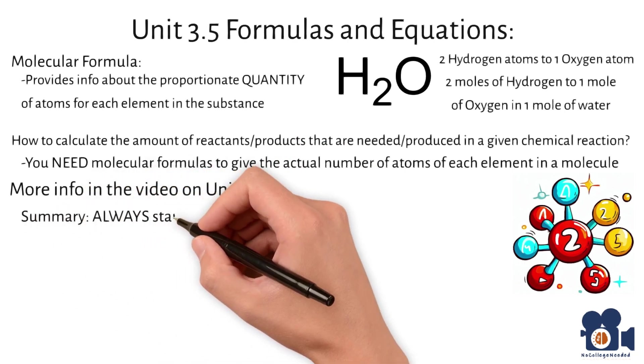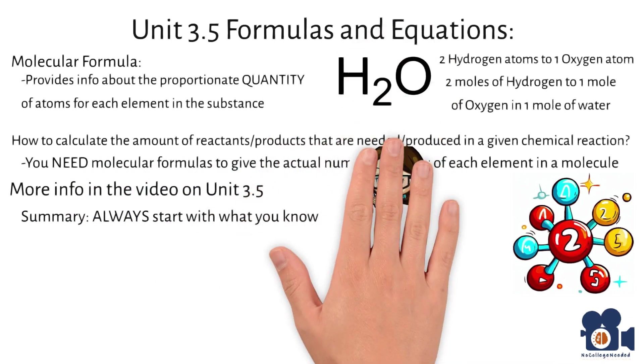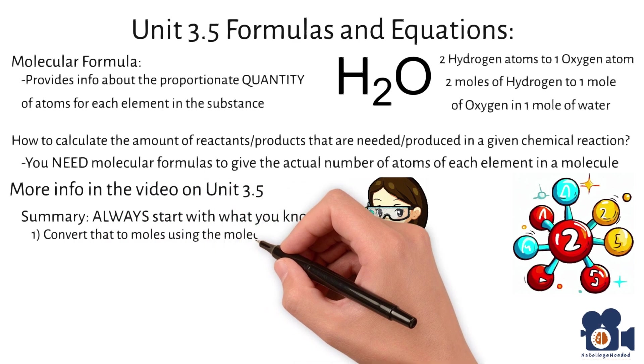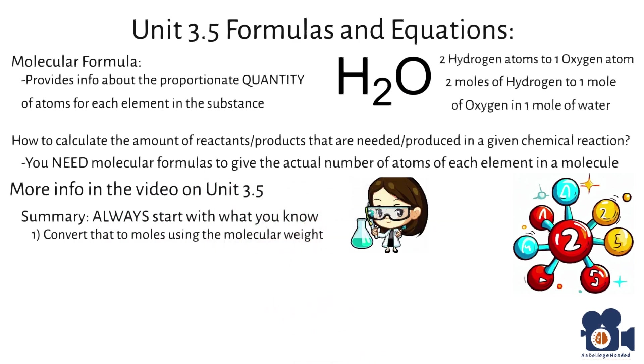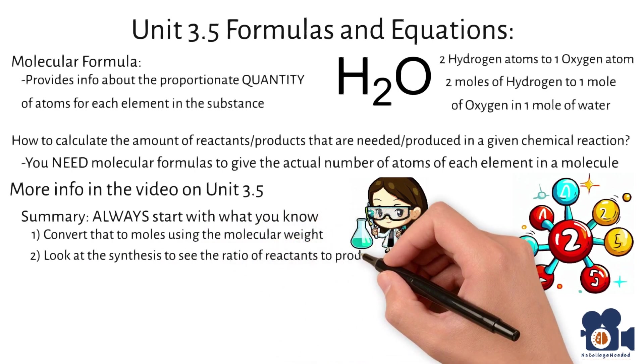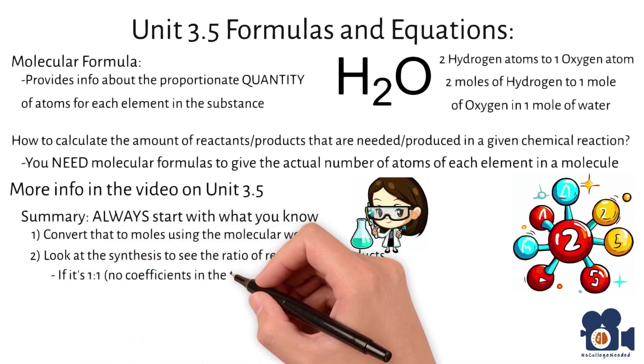For summary, you always start with what you know, and in that case it was five kilograms of lidocaine, and then you convert that to moles using the molecular weight. Once you have the moles of the product, you look at the synthesis to see the ratio of reactants to products.